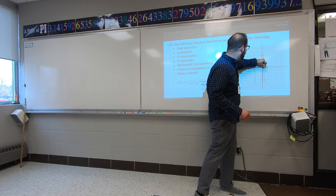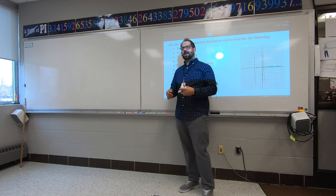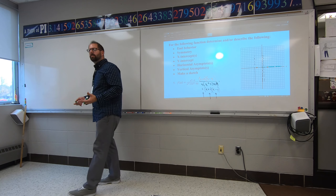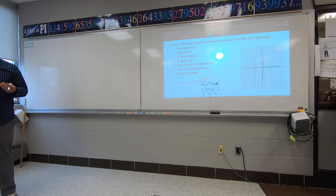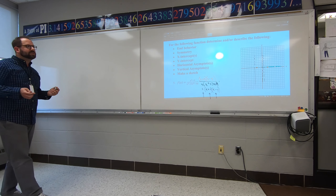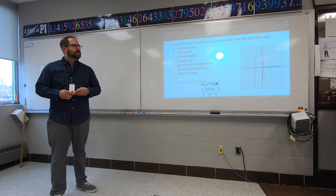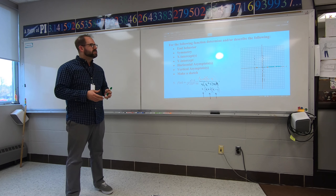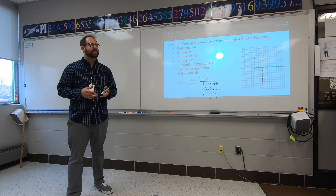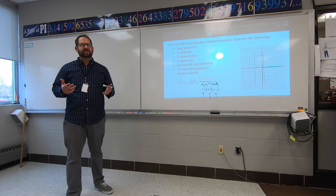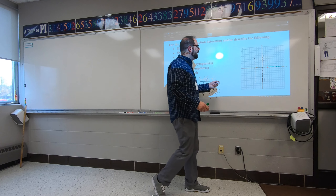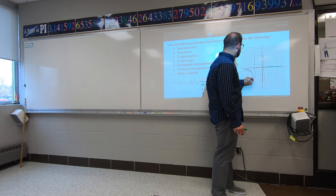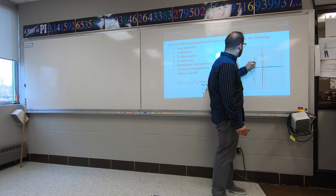The horizontal asymptote basically tells us where the end behavior tails level off on the outside — that's all it is. You can pass through it; it's kind of fluid. In this particular case I don't have a lot of extra information, so if I want to be super exact I could plug in numbers, but I'm just going to make an educated guess at what this thing is doing.